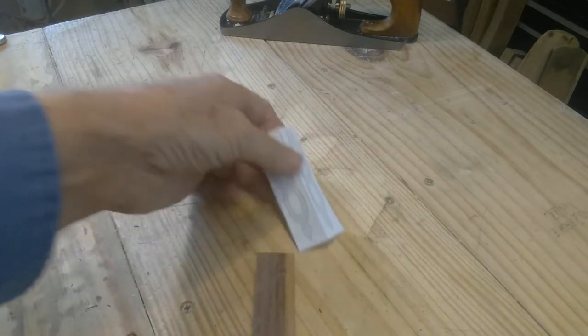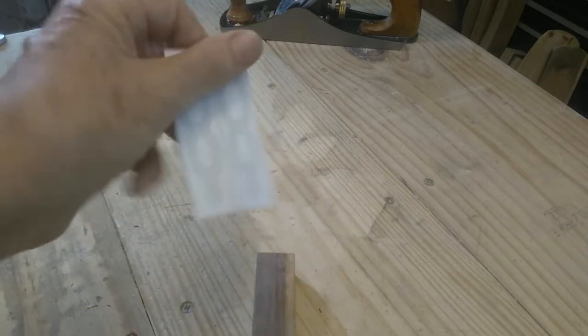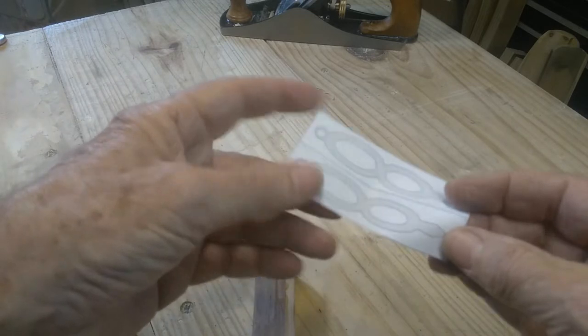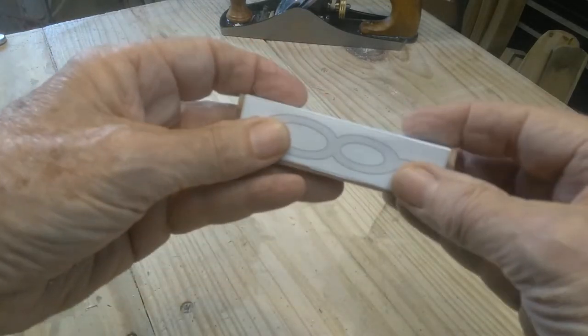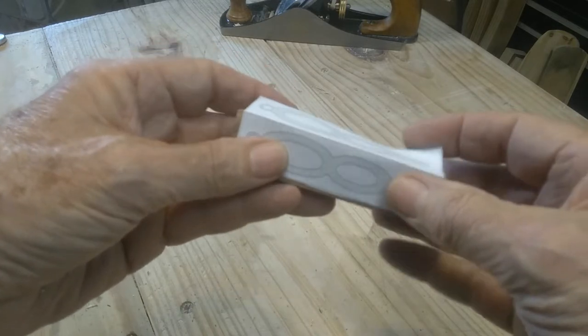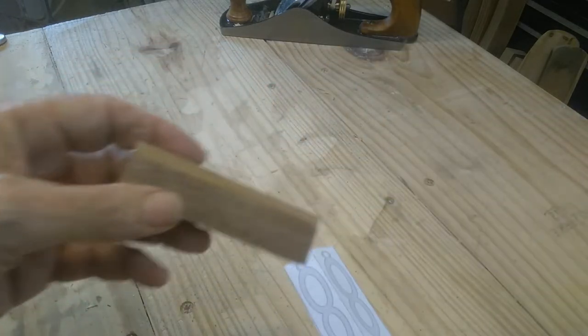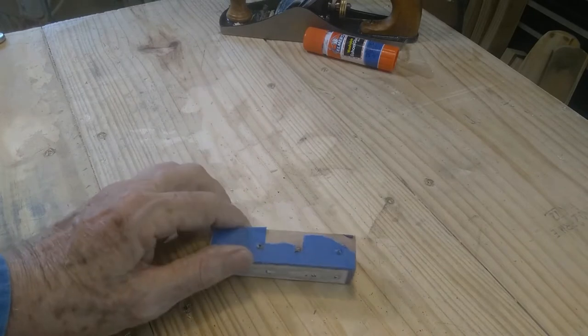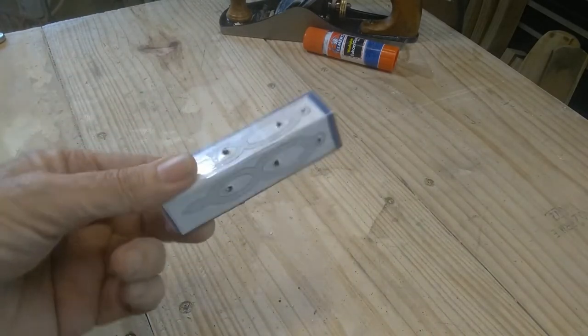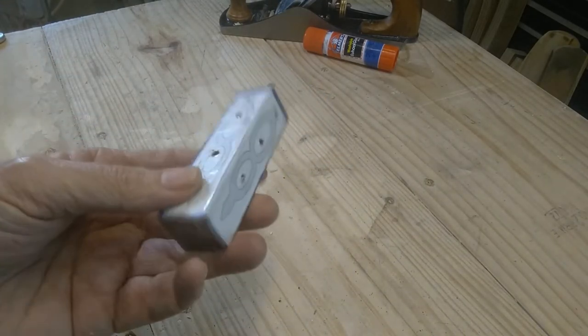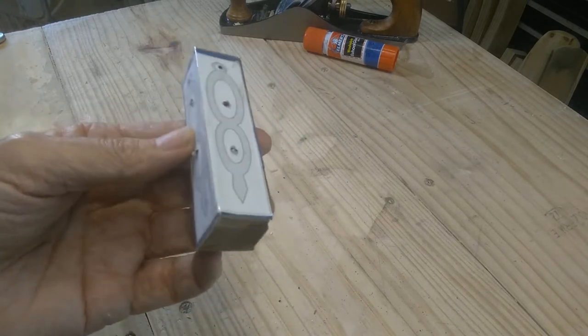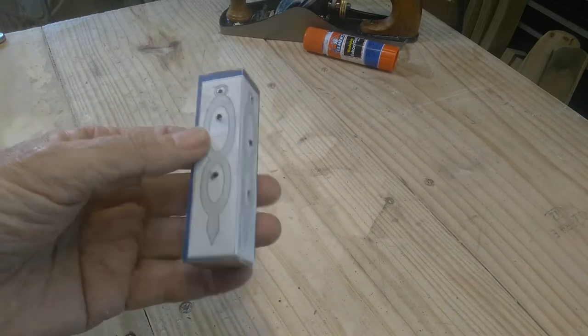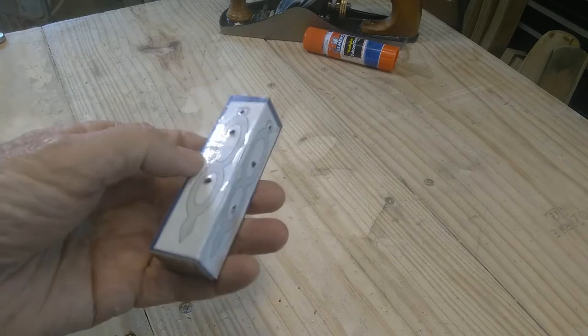As you can see, the pattern comes in two pieces. I've already folded it right on that line and I'm going to mount it just like that. I put blue tape on the piece, then I glued the pattern to that. You can see how it covers two sides. Then I covered that with my clear tape.